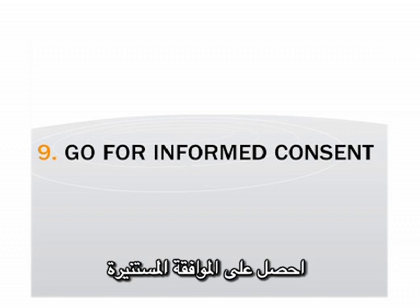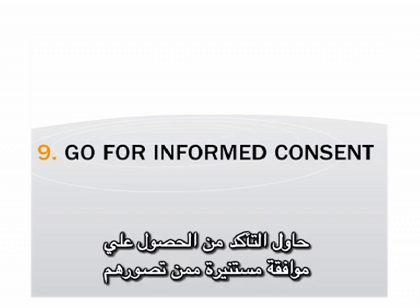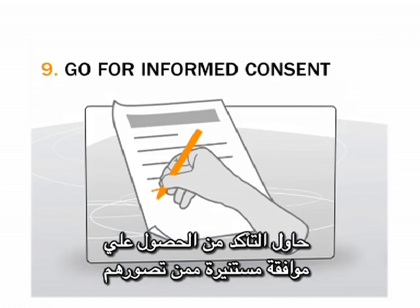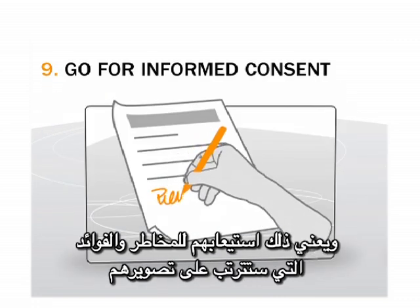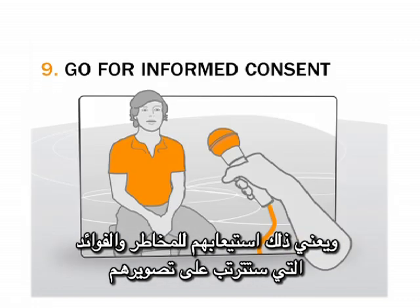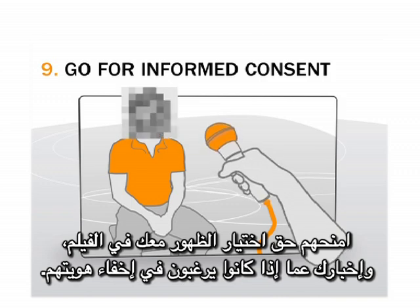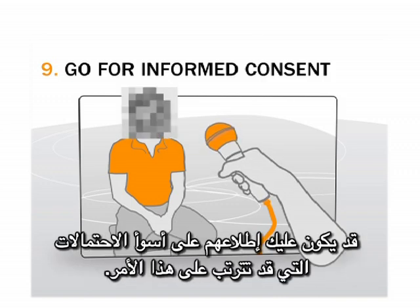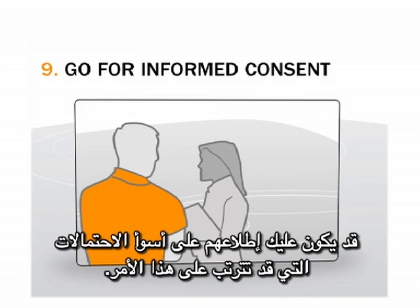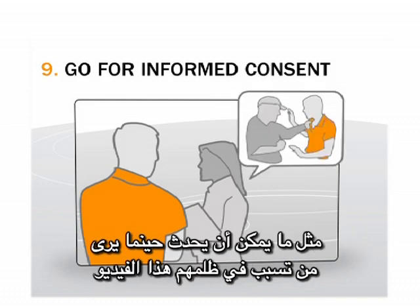Go for informed consent. Try to ensure that people you film give informed consent — this means that they understand the risks and benefits of being filmed, make a choice to be filmed, and tell you if they need to have their identity concealed. You may want to talk them through potential worst-case scenarios, such as what happens when their oppressor sees the video.